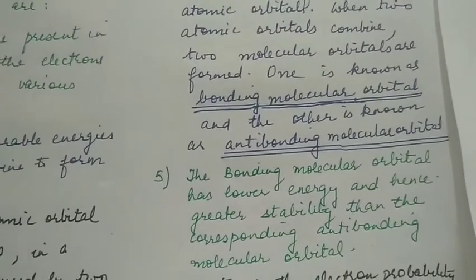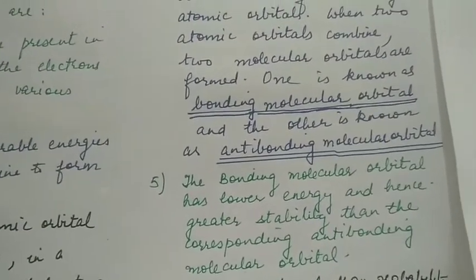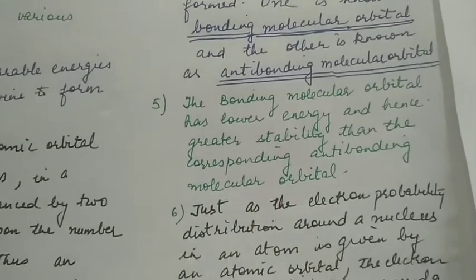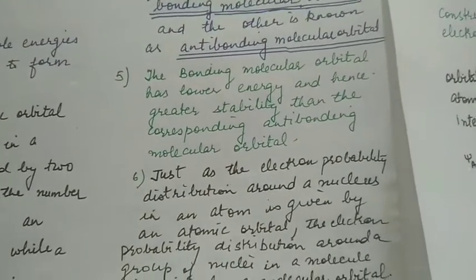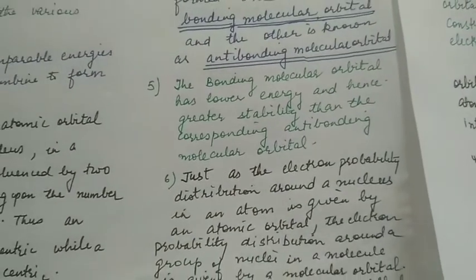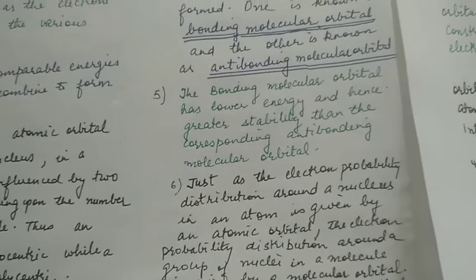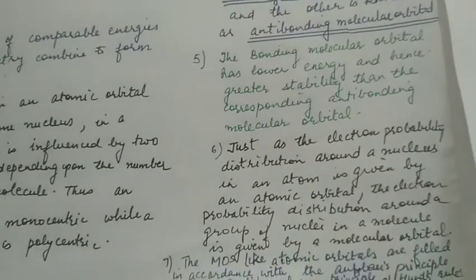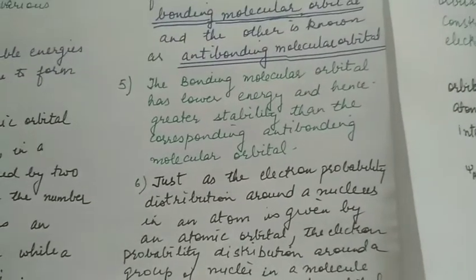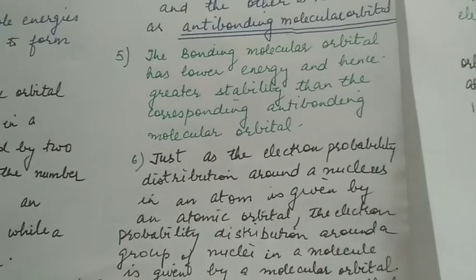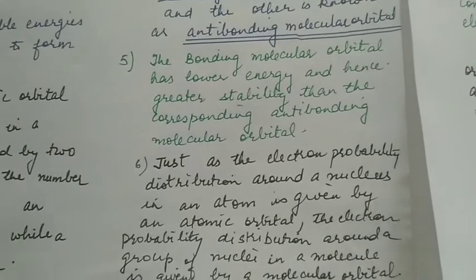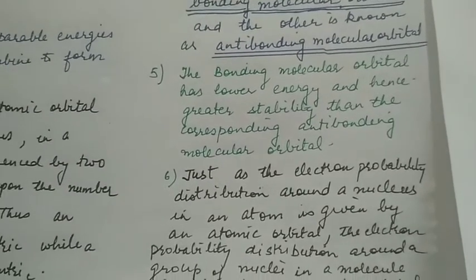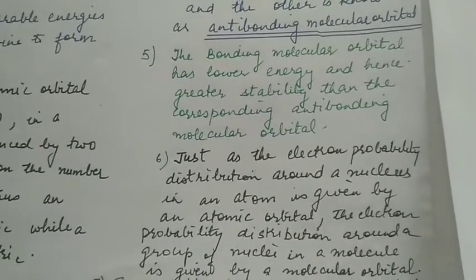One is known as bonding molecular orbital and the other is known as anti-bonding molecular orbital. The bonding molecular orbital has lower energy and hence greater stability than the corresponding anti-bonding molecular orbital.